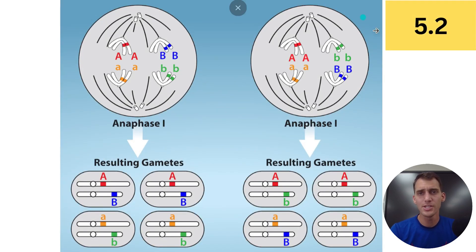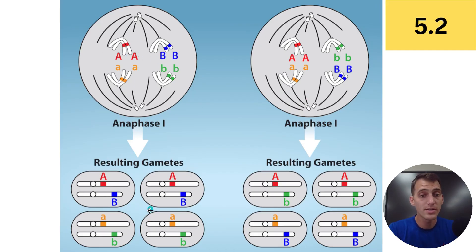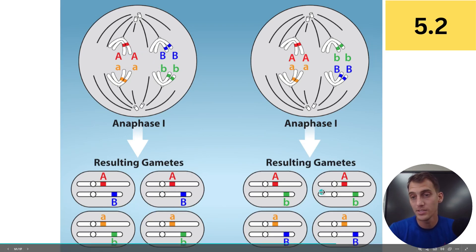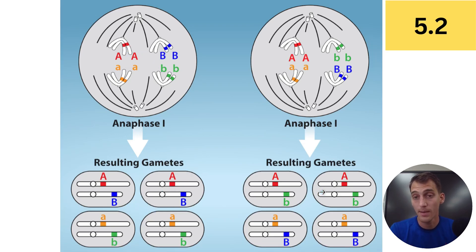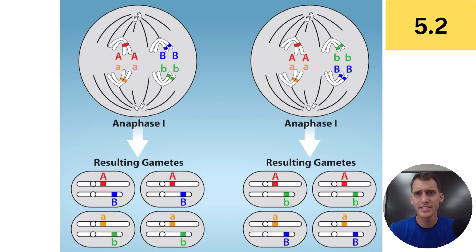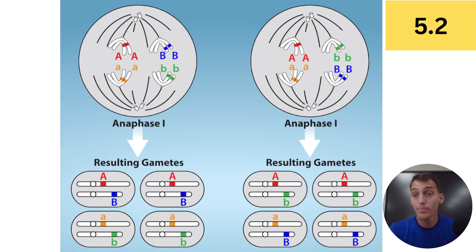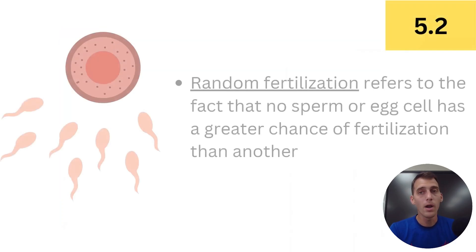Independent assortment and crossing over are pretty much guaranteeing that genetic variation is going to happen. This image shows independent assortment again — with two homologous pairs, there are four different combinations of chromosomes that you can inherit without crossing over. When I searched up crossing over, a picture came up that I put in the slides — it's not actually a picture of crossing over, so I tripped up on that, but it's there anyway.